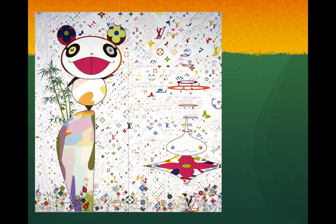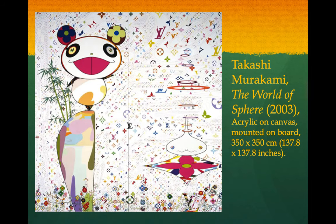Do you notice anything familiar here? This is a commissioned piece — it's been paid for by LV, so Louis Vuitton has paid Takashi Murakami, a famous Japanese contemporary artist who does cartoonish, brightly colored works, to create a collaboration. This particular painting is called 'World of Spheres.' Is this art? You can also see his design on more traditional LV luggage.